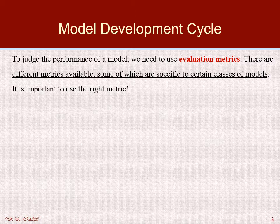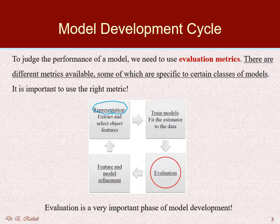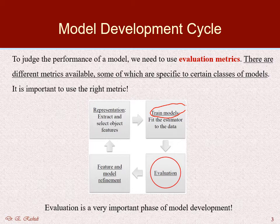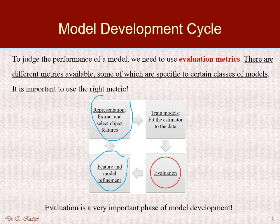Here we're going to see the graph of the four phases of the model development cycle, starting with the representation phase in which we extract and select the features we want to use in our model. Then comes the training phase in which we train our model and set the values of the parameters. After that, it comes to the evaluation phase, and then the cycle goes to feature and model refinement to make the model better. This cycle goes on and on so that we get a better model.